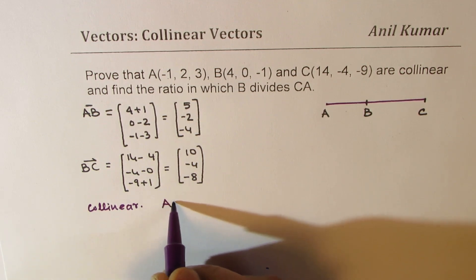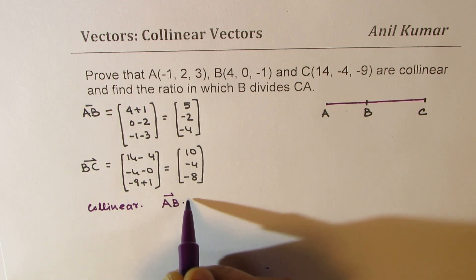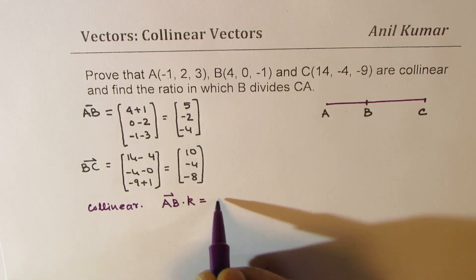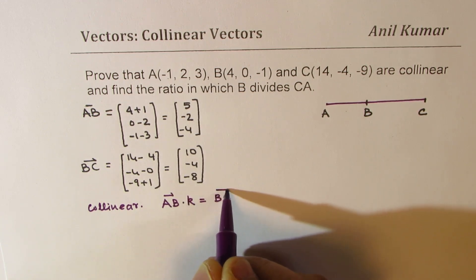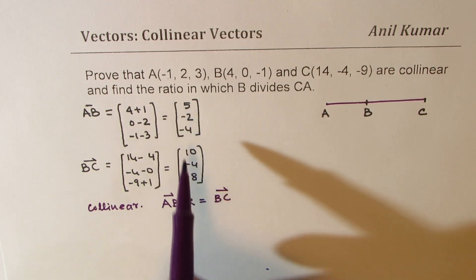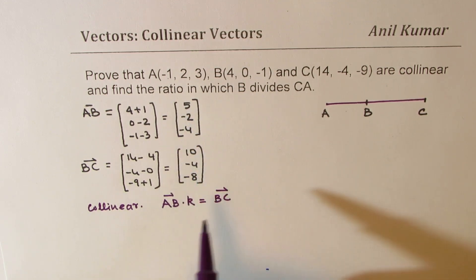So they are collinear if AB times some constant is equal to BC. Now what you can see from here very clearly is that